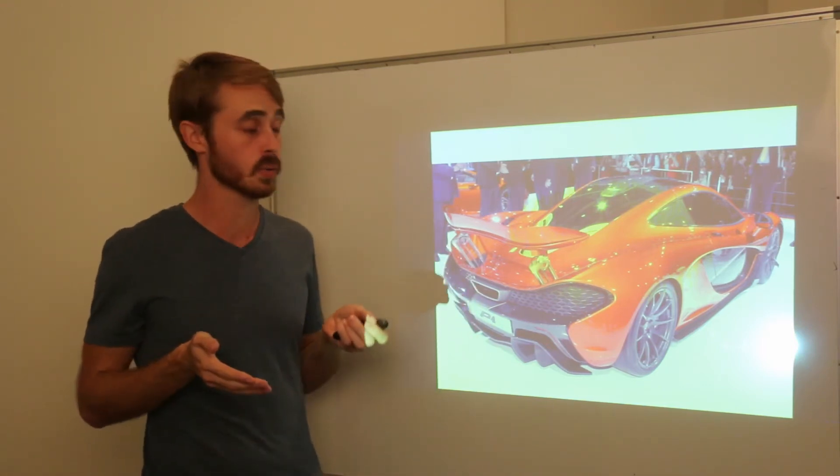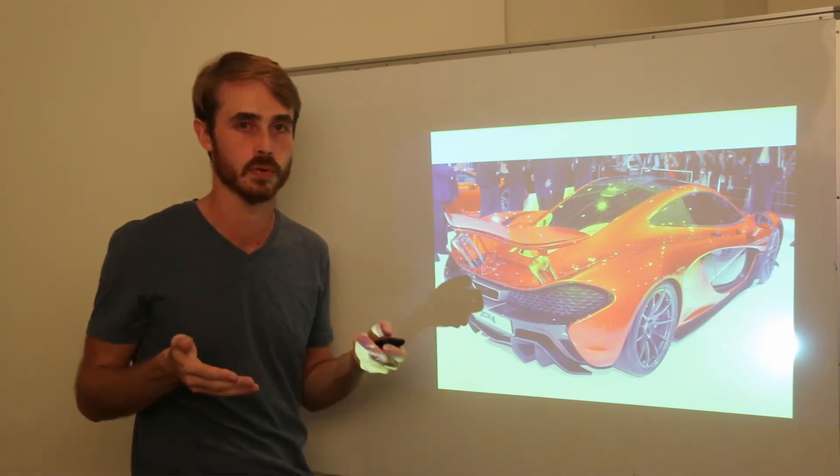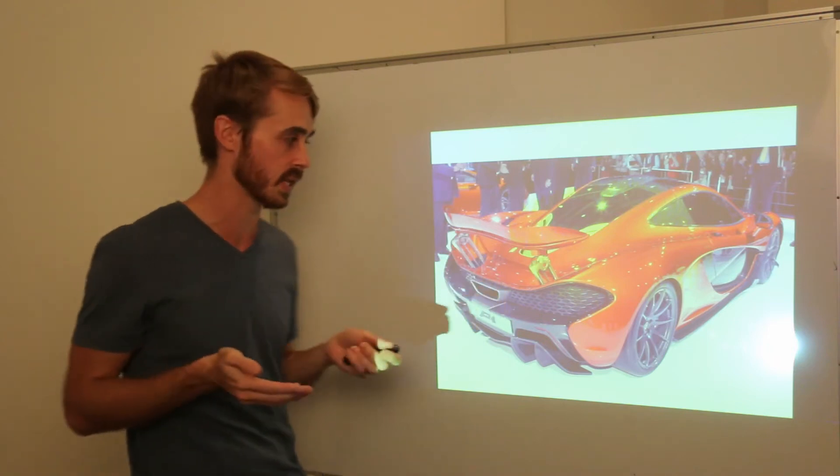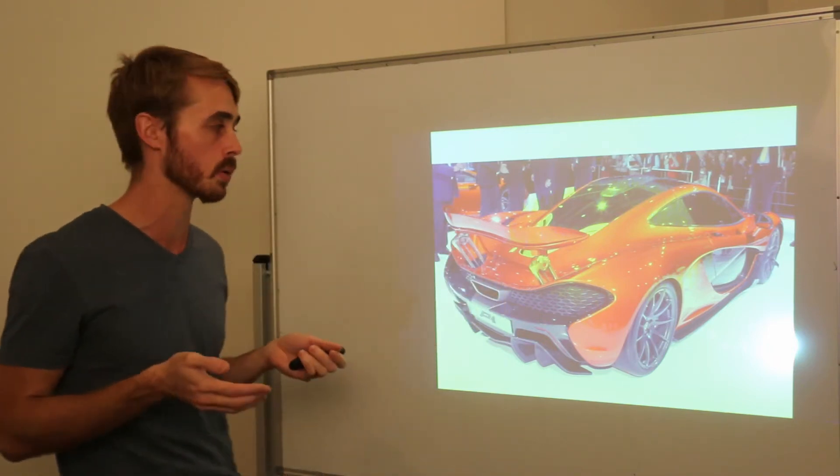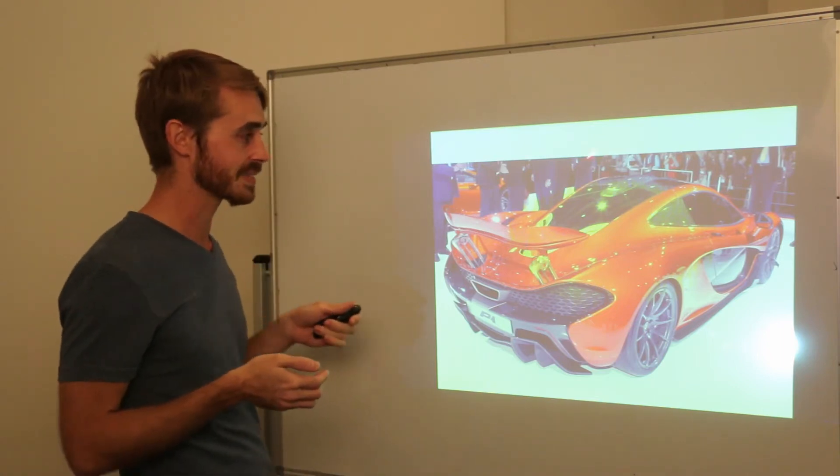While the Koenigsegg One:1 can get around it because it's got a ridiculous amount of power and has a coefficient of drag about 0.45 even in the lowest drag setting, the P1 achieves a much lower coefficient of drag, I believe about 0.31.